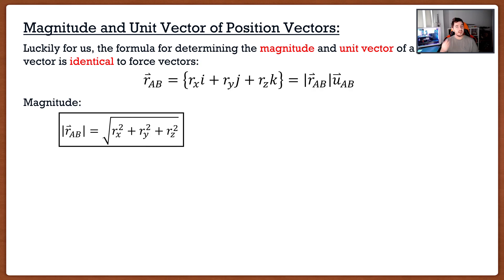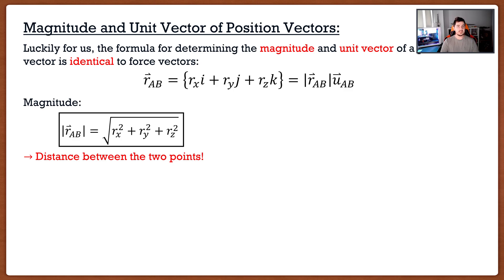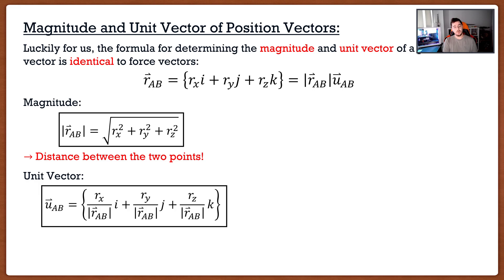The first major exam tip: the magnitude of a position vector is actually the distance between those two points — the shortest distance. This is important because professors love to say things like 'the distance between point B and point C is 6 meters.' Now you'll recognize that 6 meters is the magnitude of the position vector from B to C. The unit vector is also the same: take each component of the position vector and divide it by its magnitude — exact same procedure as force vectors.